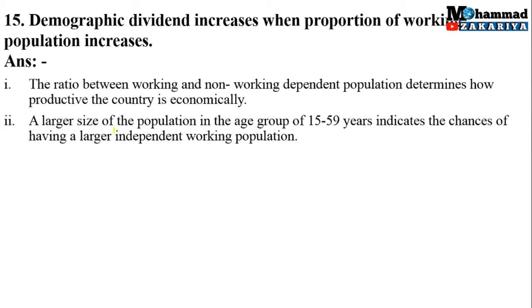Point number 2: A larger size of the population in the age group 15 to 59 years indicates the chances of having a larger independent working population. अगर country में 15 to 59 years की population ज़्यादा है तो यह development को indicate करता है, क्योंकि यह working और independent population होती है। Point number 3: The number of dependents becomes smaller than the working population. For example, child population और old age population के numbers reduce हो जाते हैं।